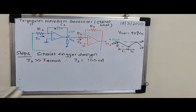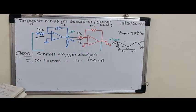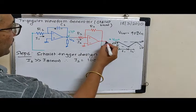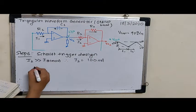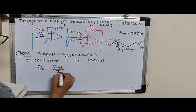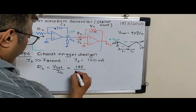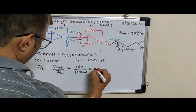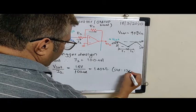So now in this case I can find out the value of R3 here because I know the voltage at this point, voltage at this point, and the current flowing through this R3 is also I2. So I can find out R3 as Vsat divided by I2. That turns out to be 14 volts divided by 100 microampere. This turns out to be 140 kilo ohms. Standard, we can use 120 kilo ohms.